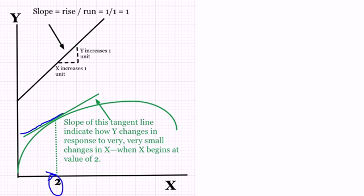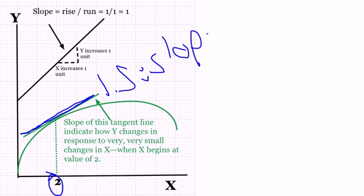So the slope of this tangent line—if that slope happens to be, let's say, 1.5—then that tells us that x has a positive impact on y.